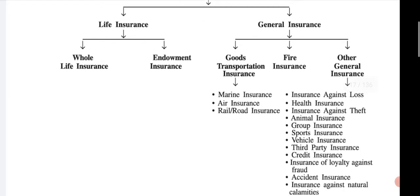Life insurance includes whole life insurance and endowment insurance. In whole life insurance, the insured amount is given to the legal heir after the death of the insured. While in endowment insurance, if the policy term is completed, the principal plus interest amount is returned.